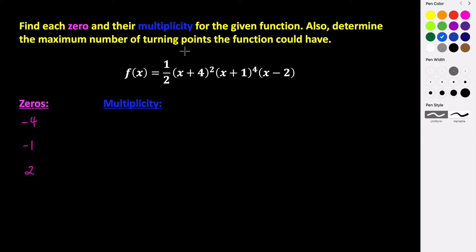Multiplicity just means how many times each zero occurs — it's basically the exponent of whatever our factor is. So if we have x plus four to the second power, this two is the multiplicity of our zero of negative four, so negative four has a multiplicity of two. x plus one is to the fourth degree, so negative one has a multiplicity of four. And x minus two doesn't look like it has a power, but it's really being raised to the first, so its multiplicity is one.